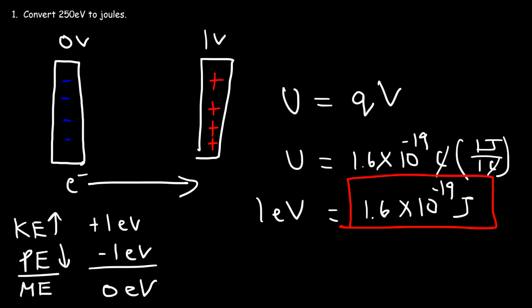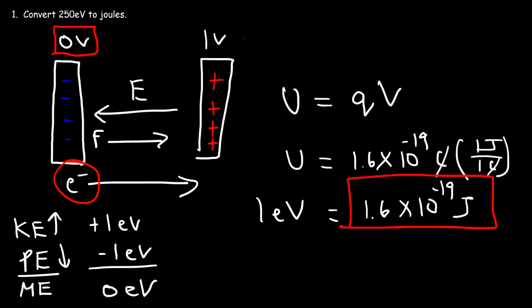The electric field is directed from positive to negative, but the electron feels an electric force opposite to the direction of the electric field. The electric force is a conservative force, and therefore it doesn't change the mechanical energy of a charged particle. So whenever a charged particle moves in the direction of or opposite to an electric field, the kinetic and potential energies change, but the mechanical energy remains the same — the kinetic energy increase equals the electric potential energy decrease.